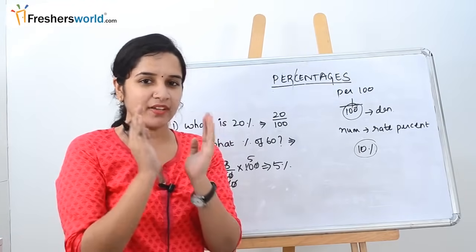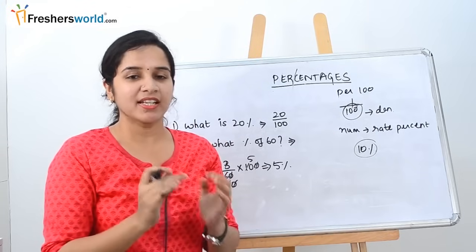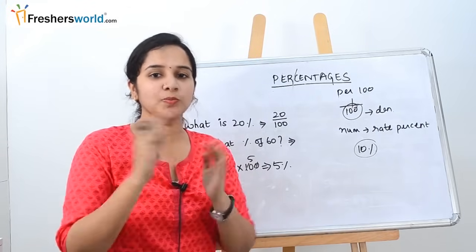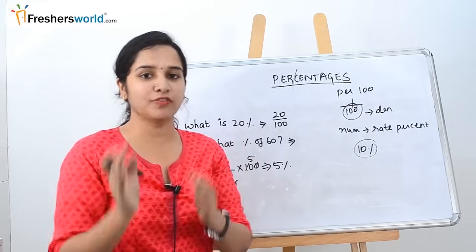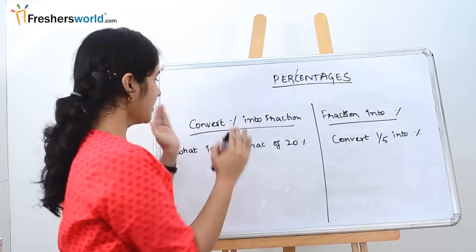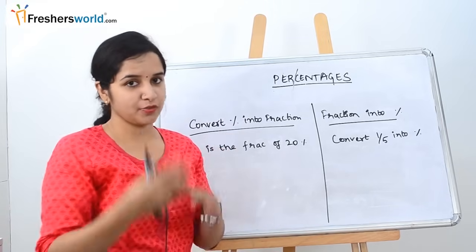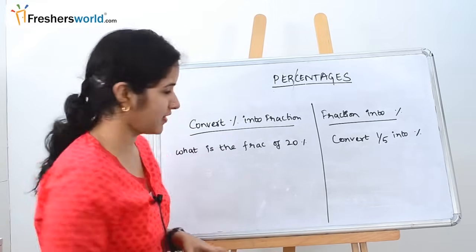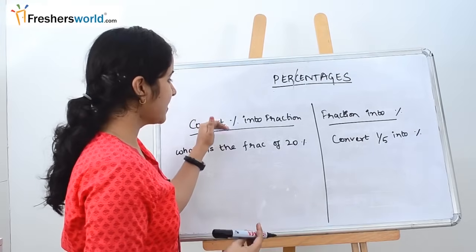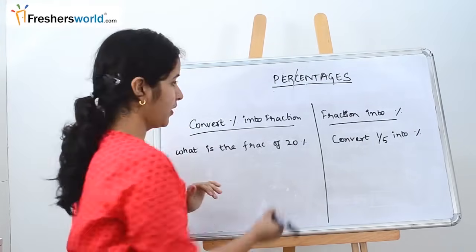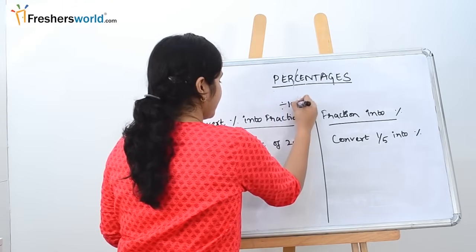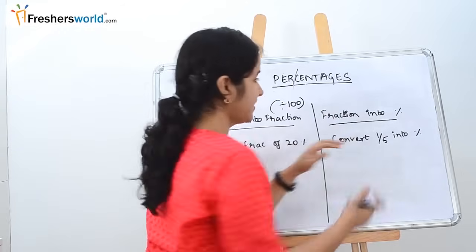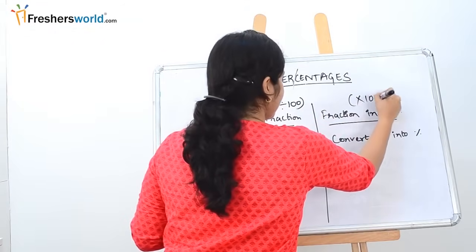Let's understand the concept of converting fractions to percentages and percentages to fractions. To convert percentage to fraction, we divide by 100. In case of fraction to percentage, we multiply by 100.